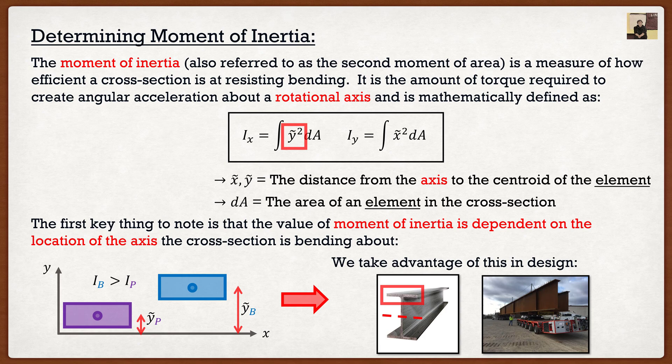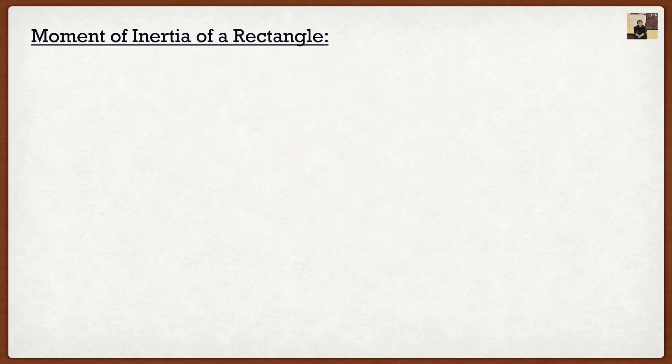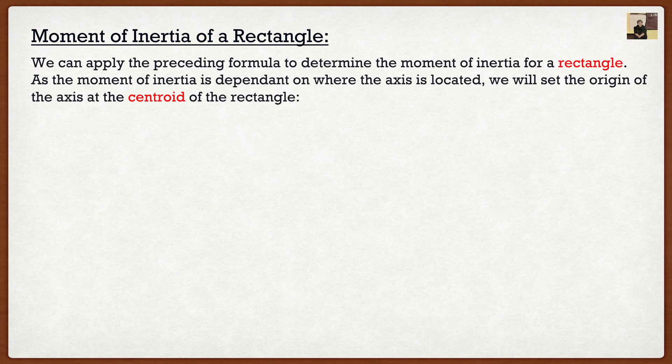So now that we have the formula and we know what moment of inertia is, we can start calculating the moment of inertia for some simple shapes. So let's start off with a rectangle. Again as I said, typically in design we're mainly interested in the moment of inertia about the centroidal axis. So this would be the axis that passes through the centroid of our shape.